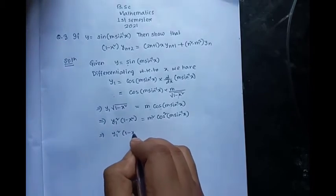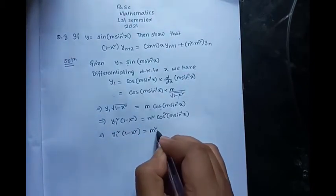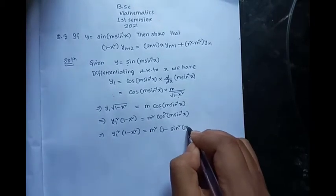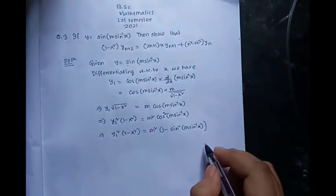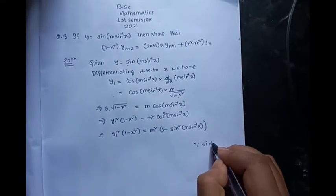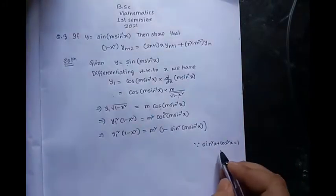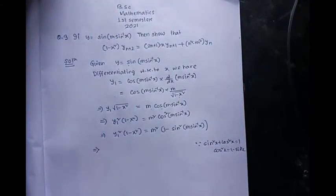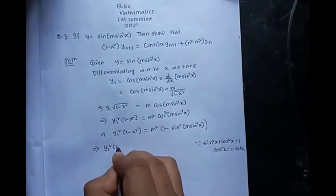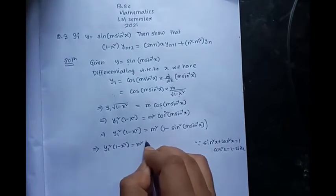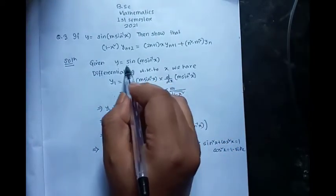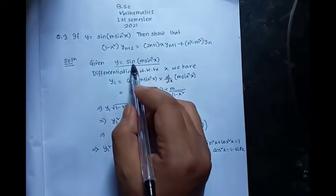On the right hand side, instead of cosine squared of m·sine inverse x, we use the identity cosine squared plus sine squared equals one, so cosine squared equals 1 minus sine squared. Since y equals sine of m·sine inverse x, we have y squared equals sine squared of m·sine inverse x. Therefore y₁ squared times (1 minus x squared) equals m squared times (1 minus y squared).